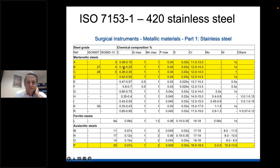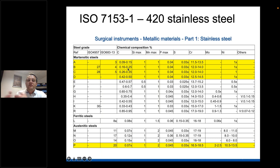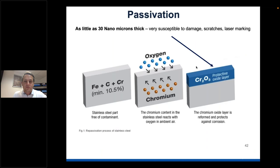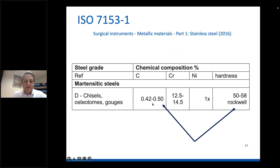Carbon content is key: the higher the carbon, the higher the hardness achievable. A steel with 0.42% carbon would be for something like an osteotome or chisel - very hard. A lower carbon steel, when hardened, still has flexibility, which is offset by higher chromium content. The osteotome requires higher carbon to achieve hardness - if you're manufacturing something like an osteotome, chisel, or gouge that has a cutting edge, it must have that level of hardness, otherwise it would dent continuously after use and would not be fit for purpose.